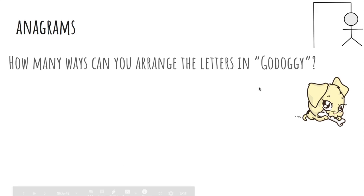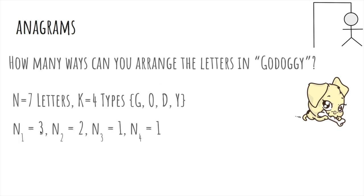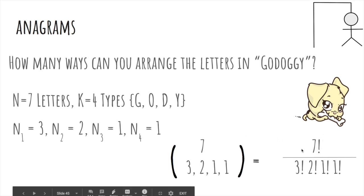So let's see how many ways we can arrange the letters in go doggy. So there's n equals seven letters, and there's only four distinct letters, g, o, d, and y. So there's three g's, so n1 is three. There's two o's, so n2 is two, and then there's only one d and one y, so n3 and n4 are one. So the answer is seven factorial divided by three factorial because there's three g's, two factorial for the two o's, and one n1 for the d and the y.